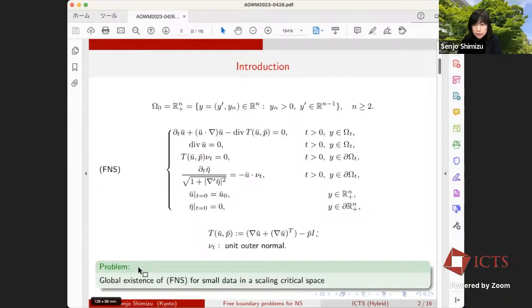The normal direction of the stress tensor vanishes on the free boundary. Here, stress tensor capital T is here. The fourth equation is the kinematic boundary condition, which shows that the normal velocity of the boundary equals the magnitude of the velocity vector to the minus unit outer normal. The fifth and the sixth equations are initial conditions. I called this problem FNS, abbreviation of a free boundary problem of the Navier-Stokes equations. In this talk, I'd like to consider global in time existence of free boundary problem of Navier-Stokes equations for a small initial data in a scale invariant space for a not-bounded domain close to the half space.